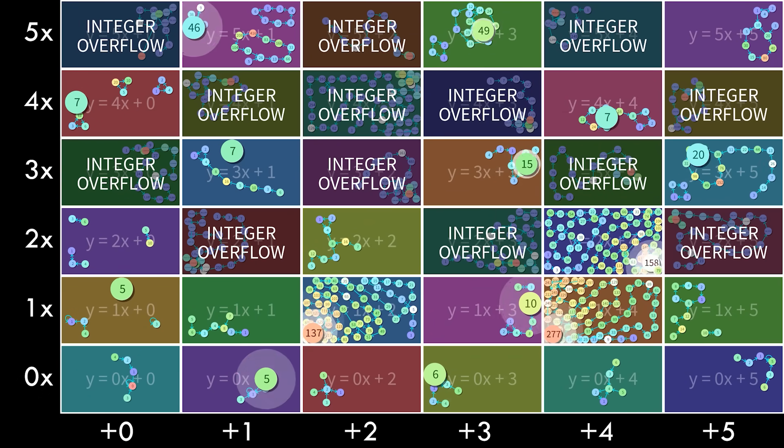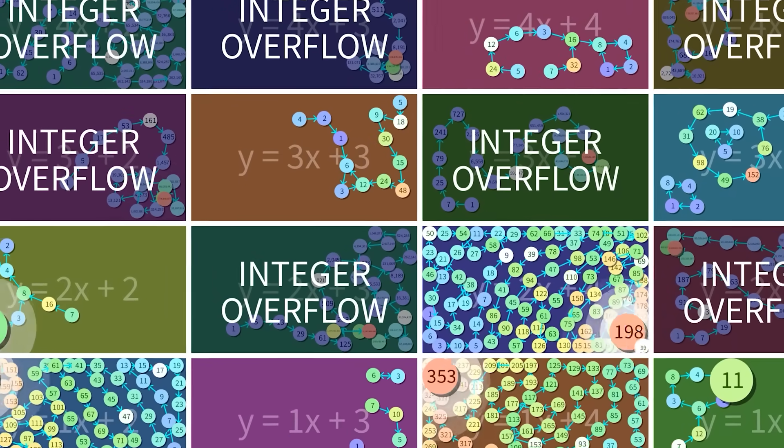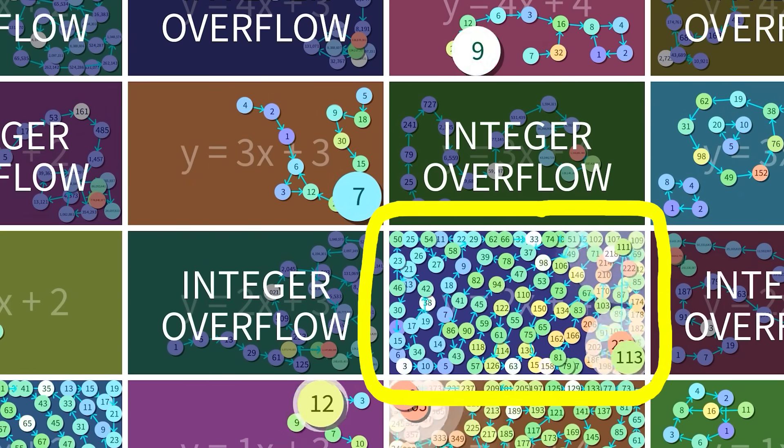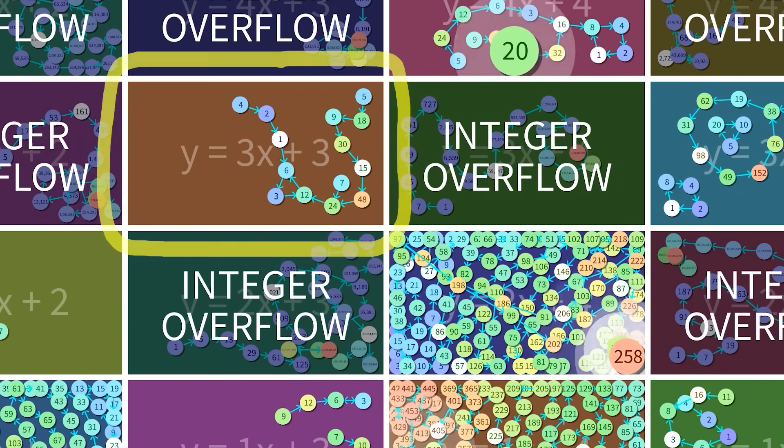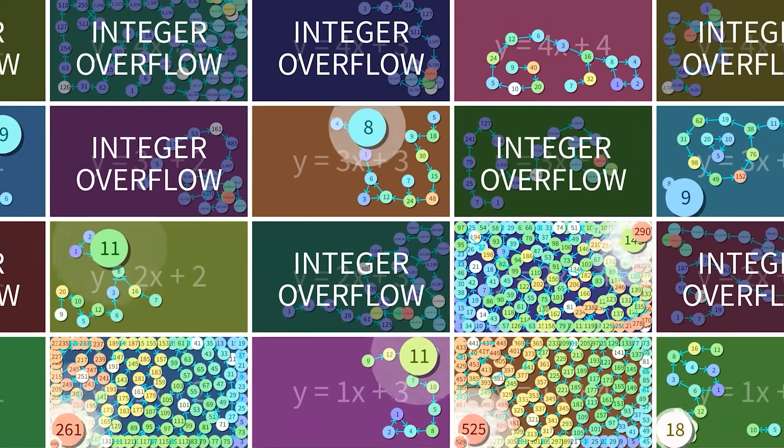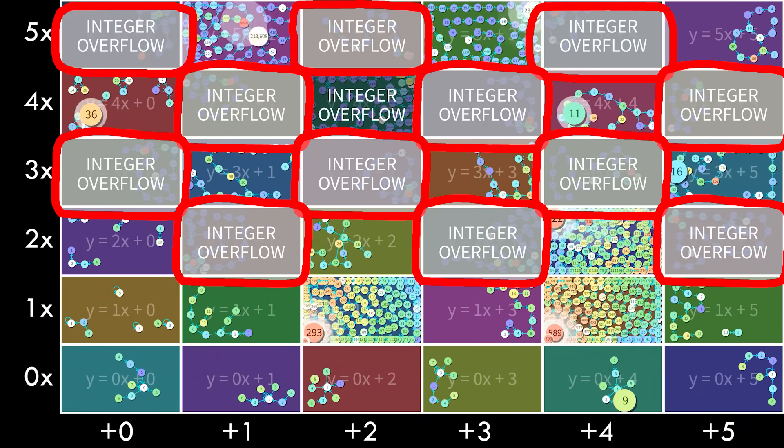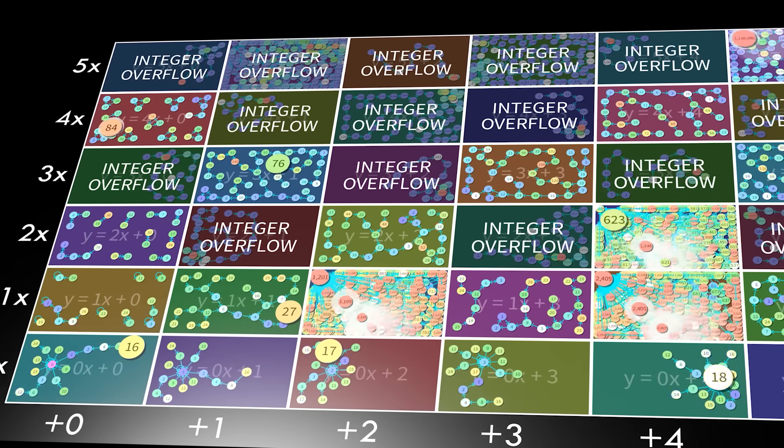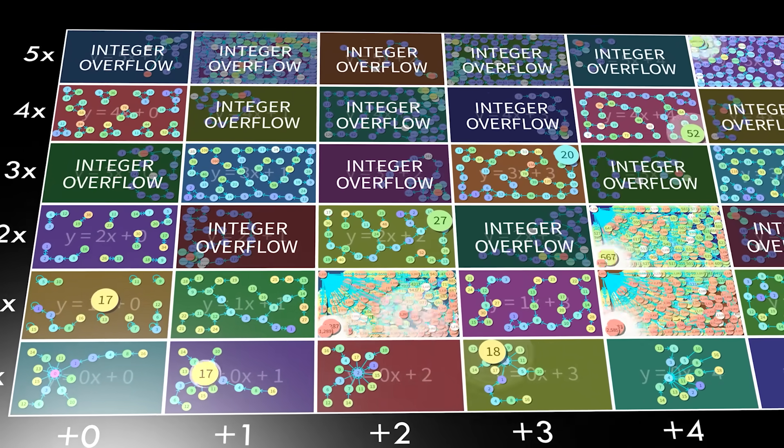You might look at this chaotic expanse in front of you and wonder to yourself, why do some universes get absolutely jam-packed with numbers, while others are relatively empty? And why do a third of them say integer overflow? Let's take a tour of the multiverse to learn the answers to those questions.